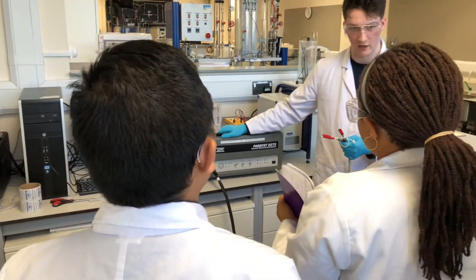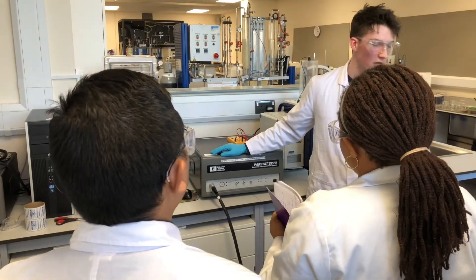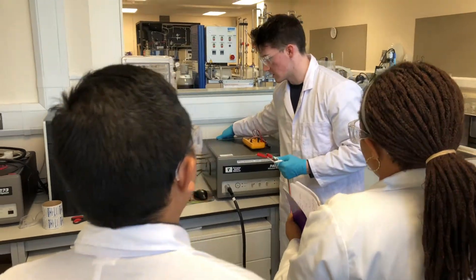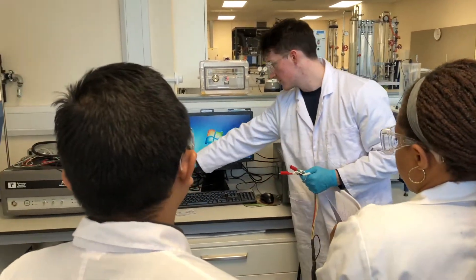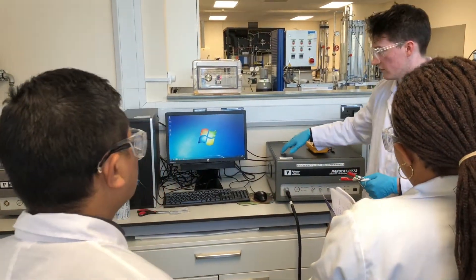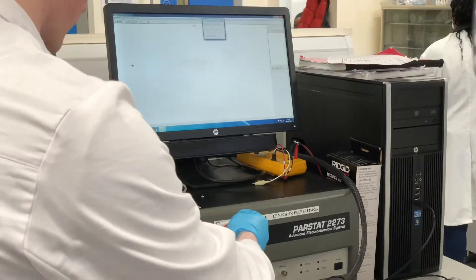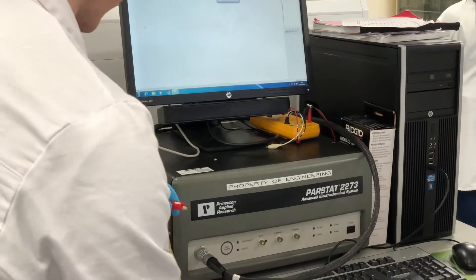And what it's going to do is it's going to vary the current that it draws out of the fuel cell and it will measure the voltage. And you can see the power stats actually linked up to our PC here and it's going to make all the recordings through a program called PowerSuite. Let's just move to connect up our anode and cathode.